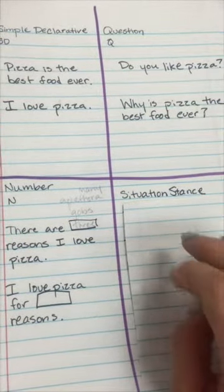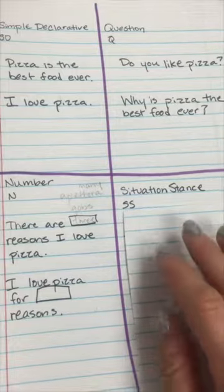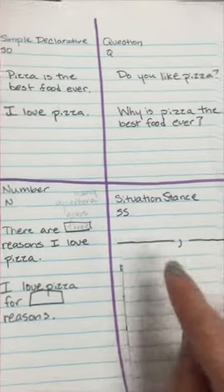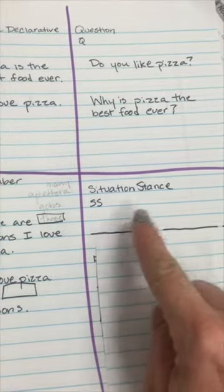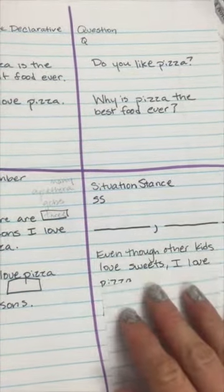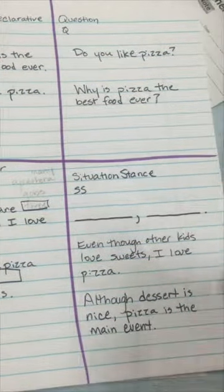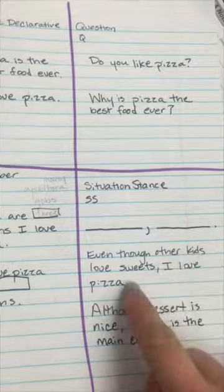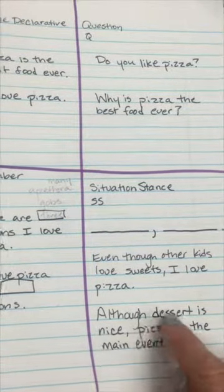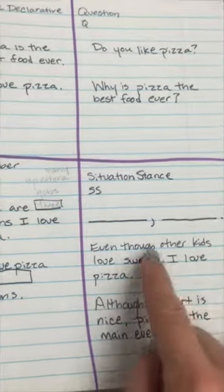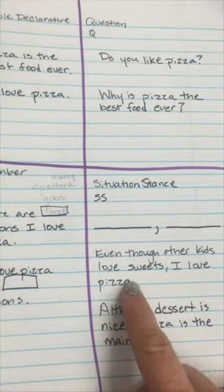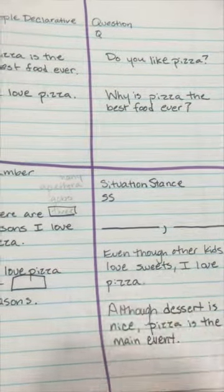This is called a situation stance, or SS. The idea here is it's la la la la la la la, da da da da da ding, and that's how I teach my kids the two parts of the sentence. So these will start with words like even though, although. Even though other kids love sweets, I love pizza. Although dessert is nice, pizza is the main event. So there's a situation and then the stance that you take, and that works really well with opinion pieces.